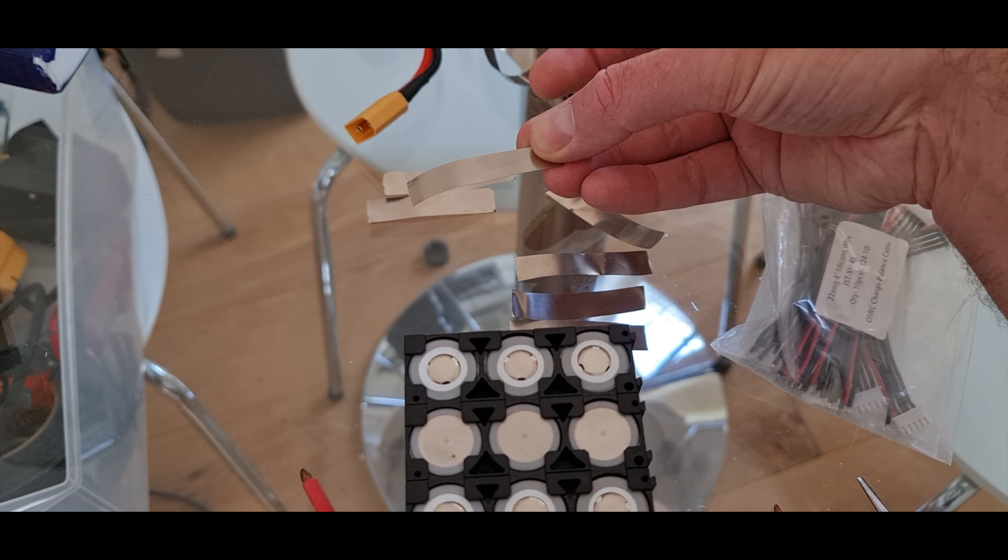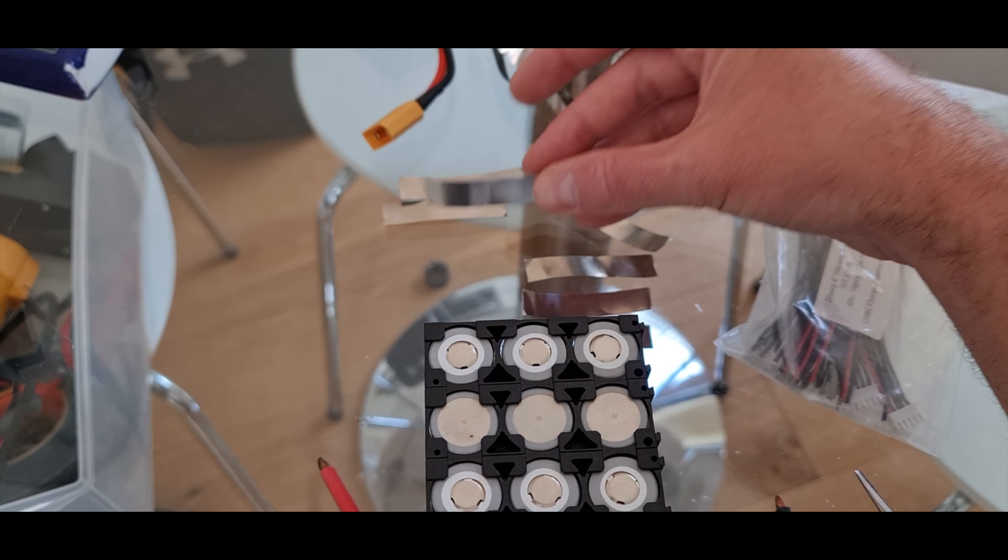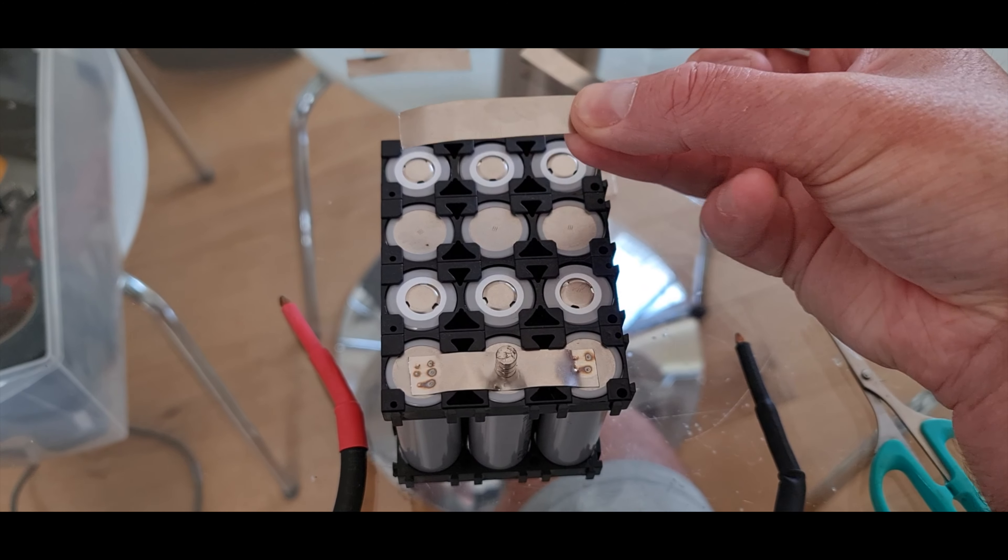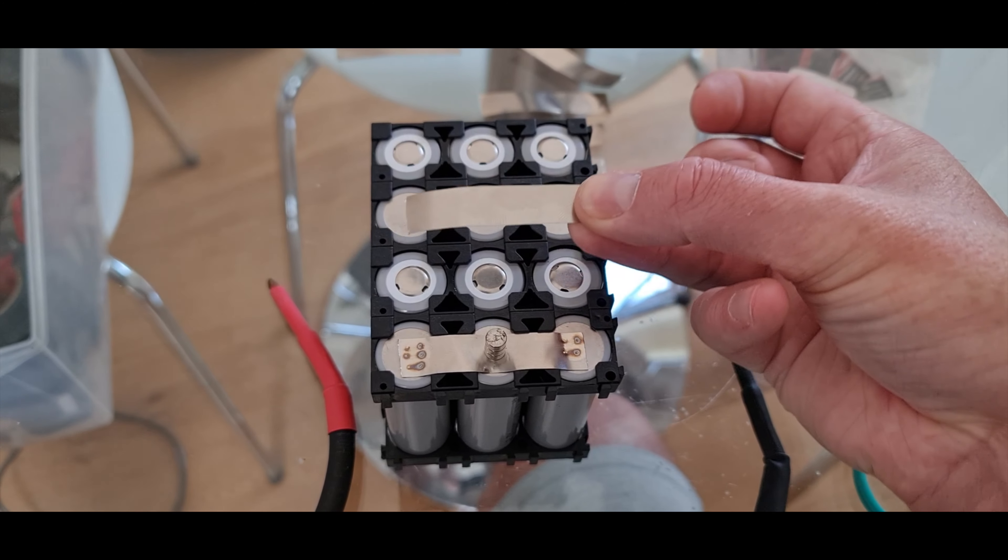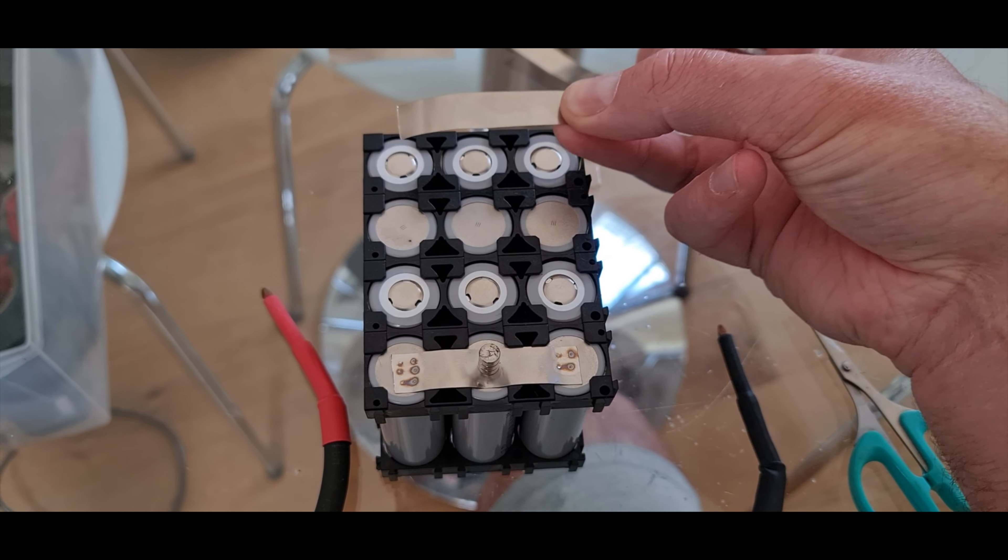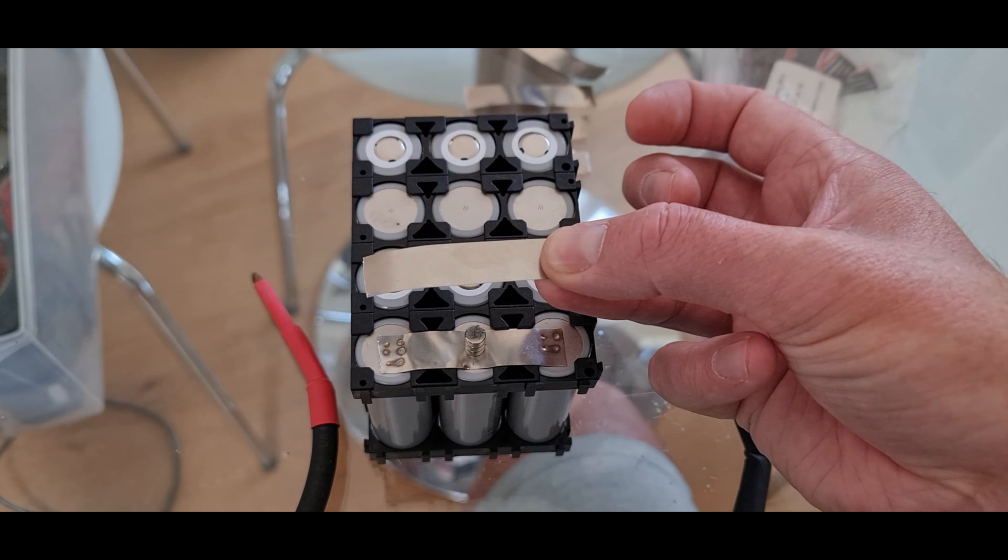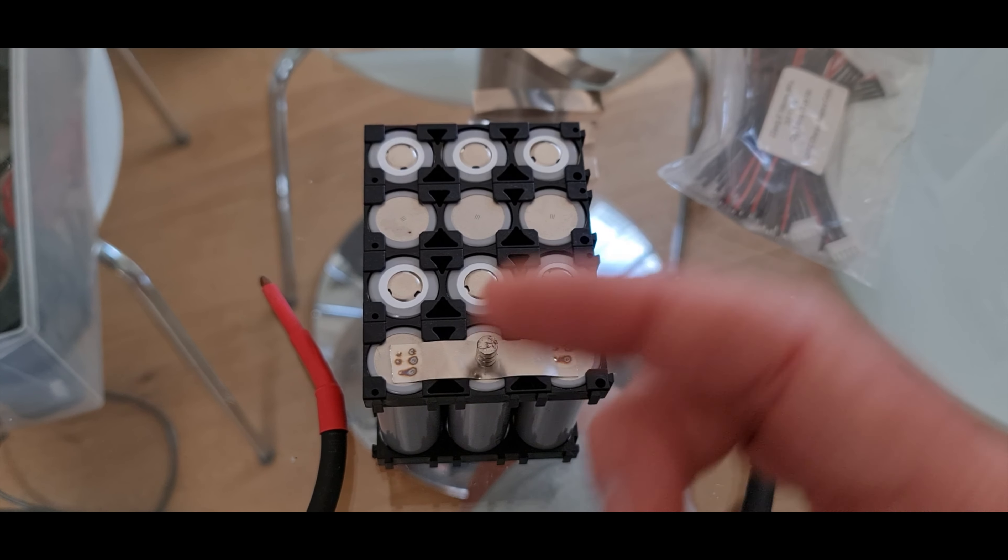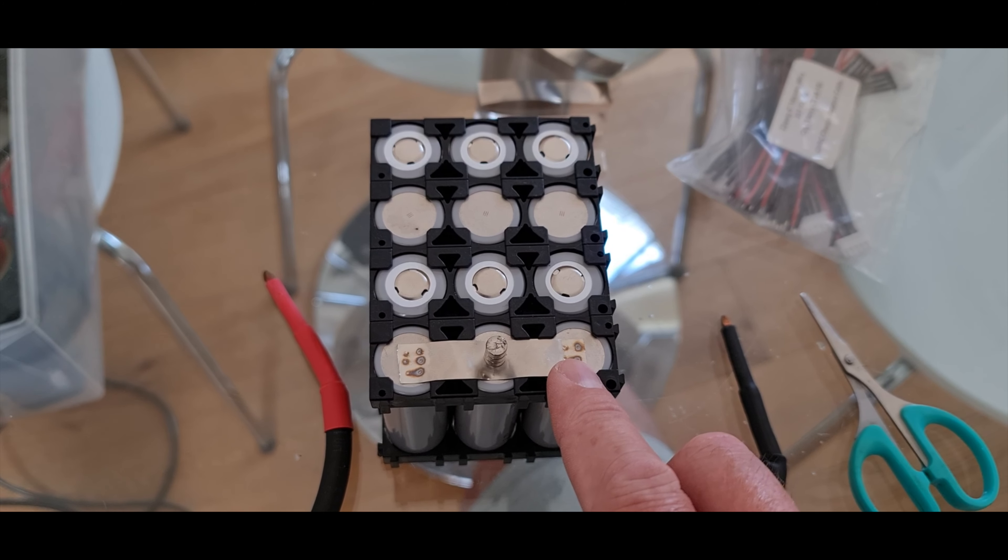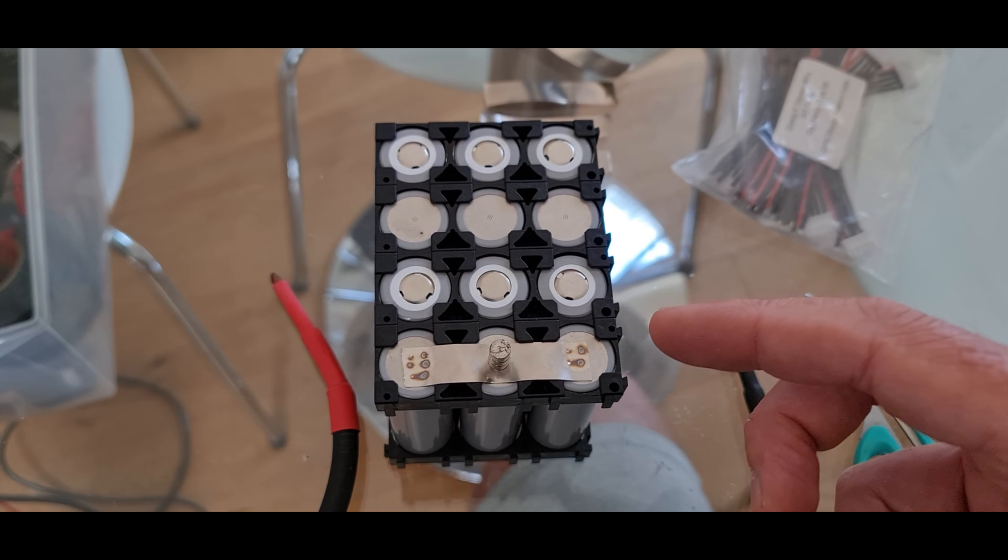The next step is some genuine nickel strip. This isn't the thickest nickel, we don't need that. Make it easier to weld. Basically what we're going to do is put a string across each of the tops of the batteries. This won't do anything yet because you're basically connecting all the positives together, all the negatives together. Then you flip the battery over, do exactly the same on the other side, and that creates a 15 amp hour block. Then you connect them in series.